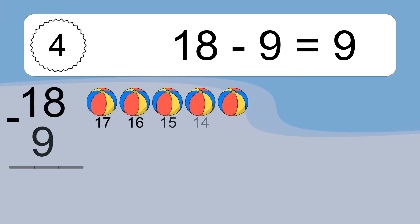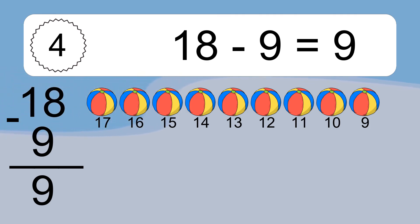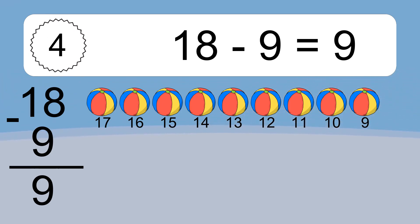18 minus 9 equals what? 18 minus 9 equals 9. Let's count it: 17, 16, 15, 14, 13, 12, 11, 10, 9.